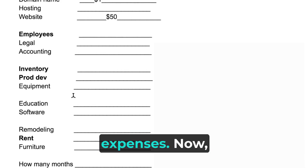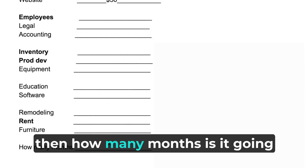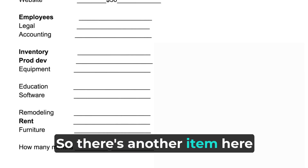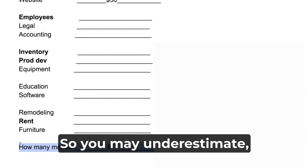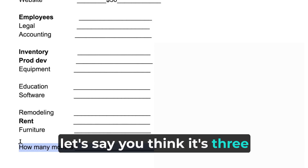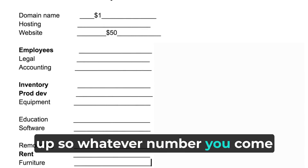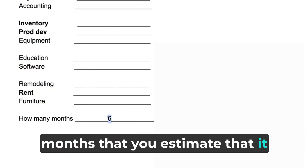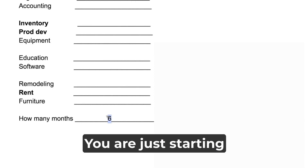Once you create this list and add it up, ask yourself: how many months will it take to break even financially? That item is on this worksheet but wasn't on the previous one. You may underestimate, so just double it — if you think it's three months to break even, give yourself six. Then multiply your monthly total by that number of months, and that's how much money you need to raise.